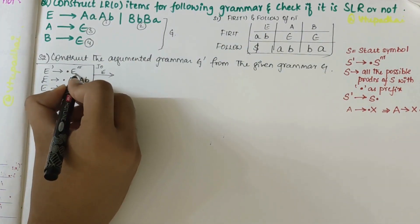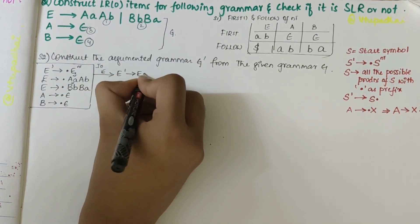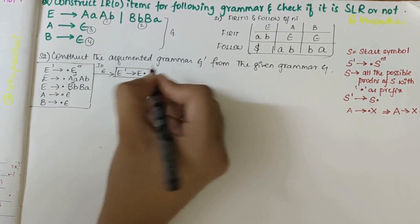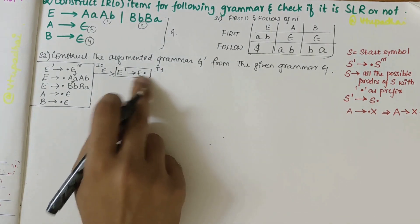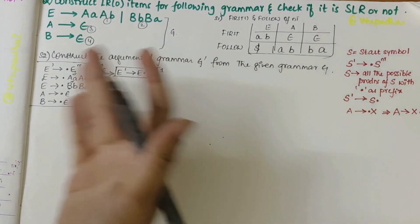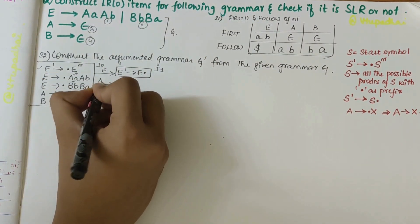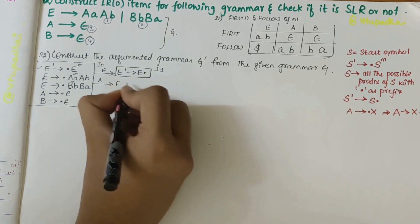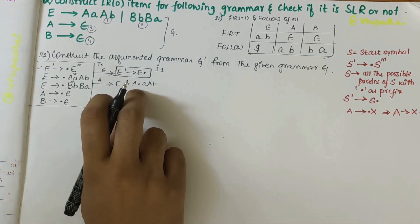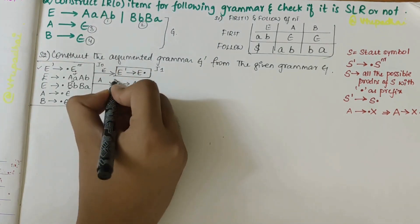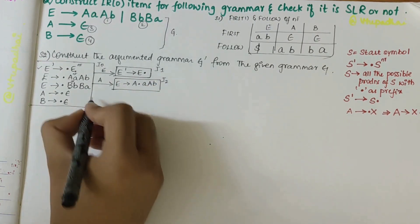Over E I shift the dot, so I get E' → E•. I'll consider this as I1. After the dot there's no non-terminal, so no further expansion needed. Moving on — over capital A from I0 I get E → A•aAb; after the dot I have small 'a', which is a terminal, so I need not expand it. This will be I2.